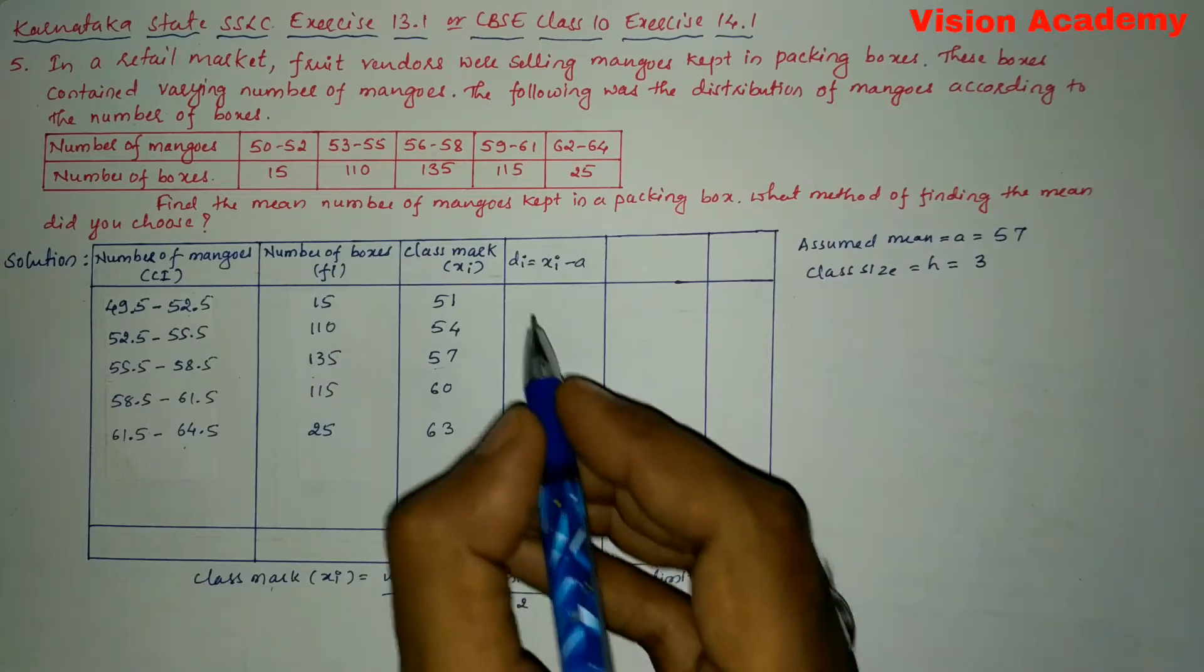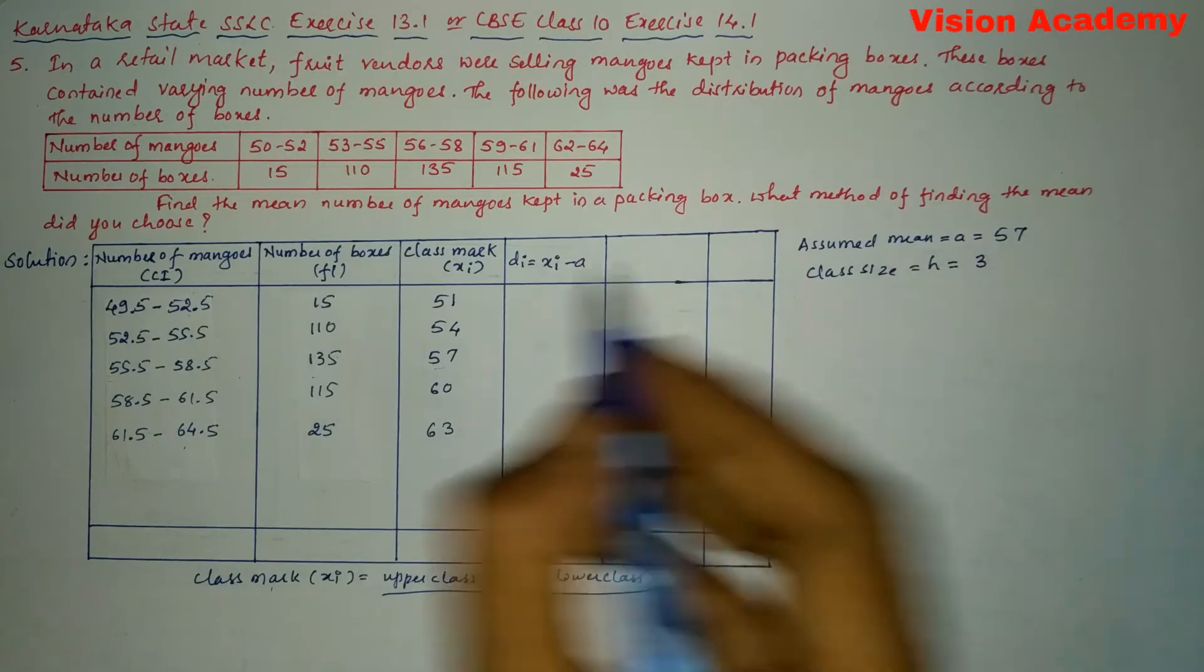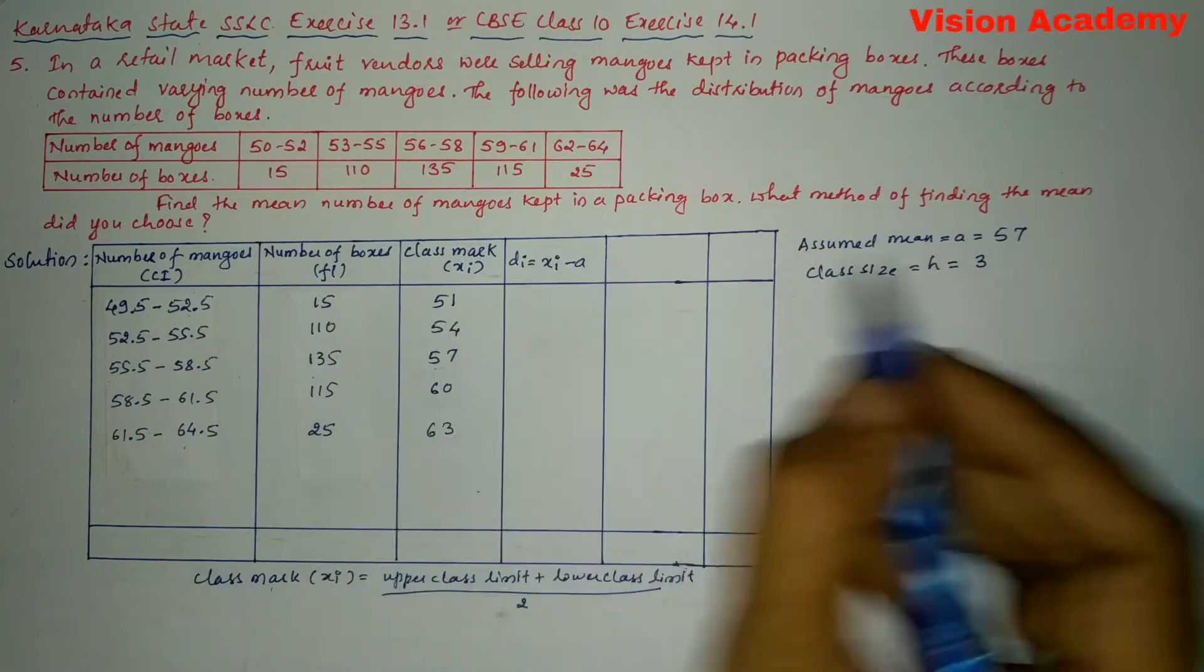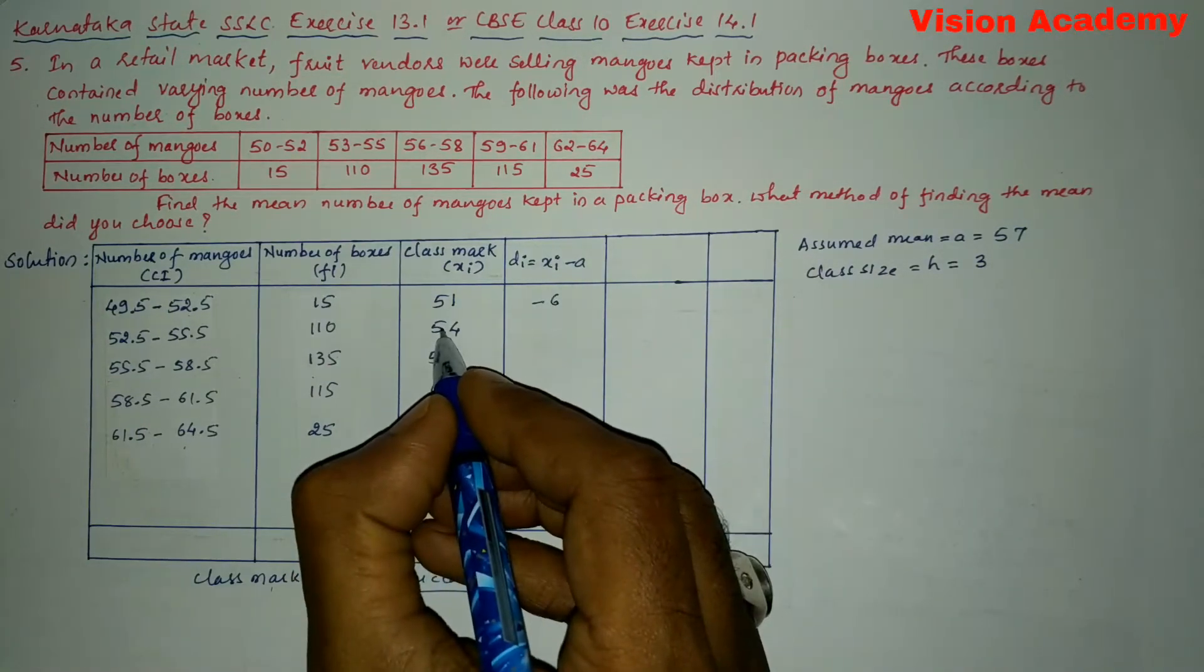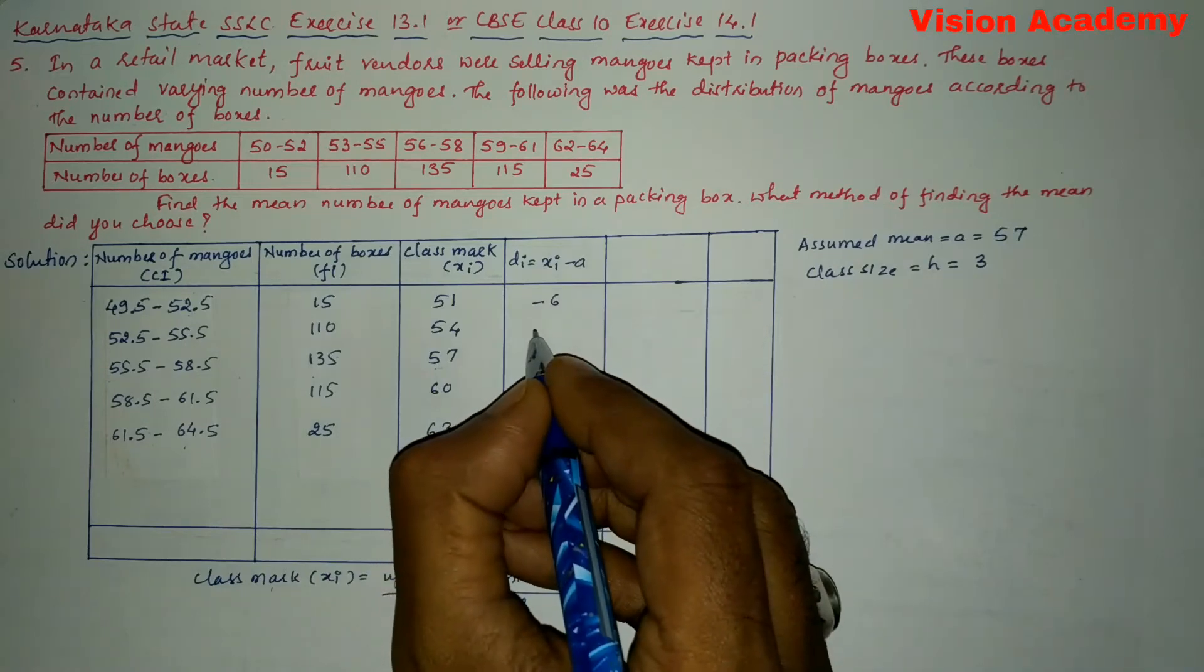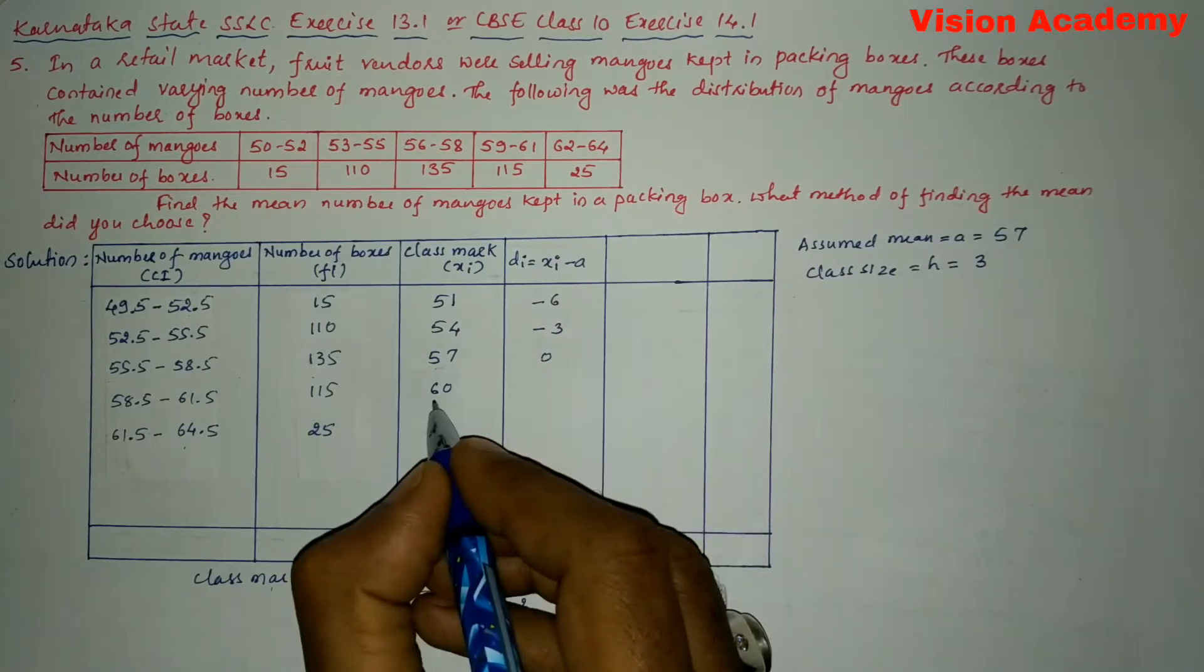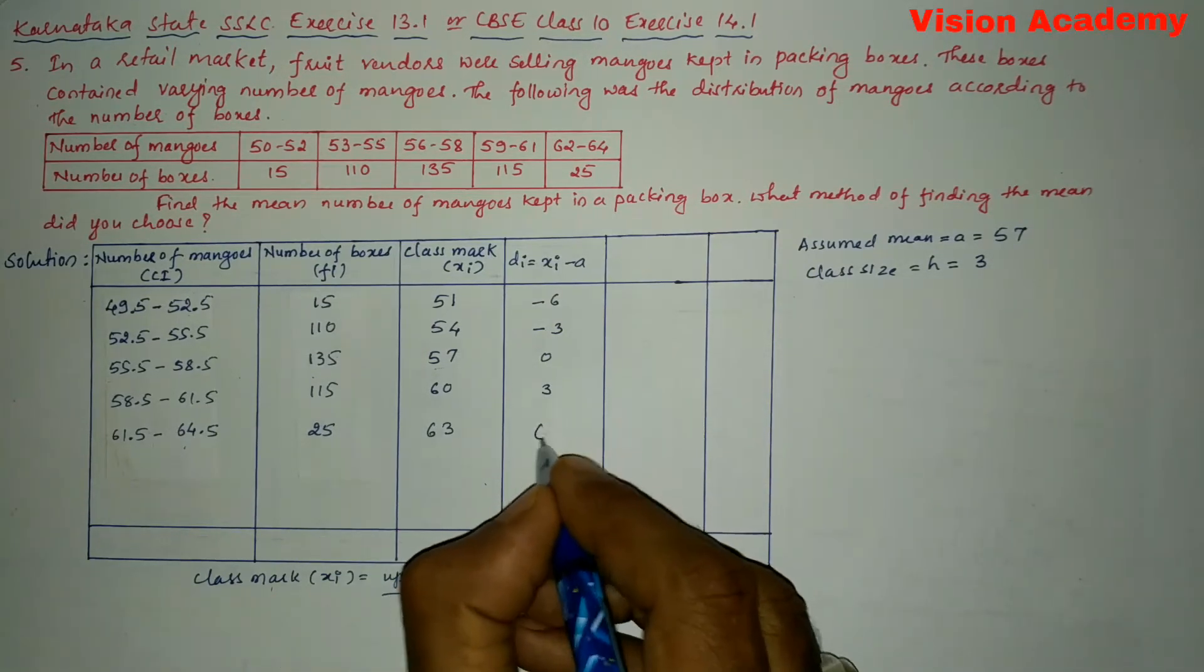Next we are going to subtract this value of a that is 57 from xi. So here we will get di, so 51 minus 57, this gives us minus 6. Next 54 minus 57 gives us minus 3. 57 minus 57 is 0. Next 60 minus 57 is plus 3. 63 minus 57 gives us plus 6.